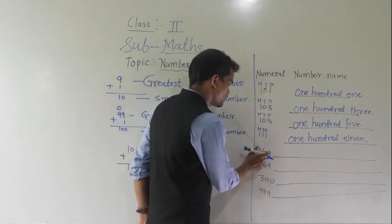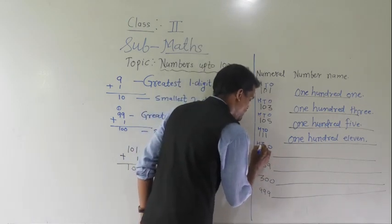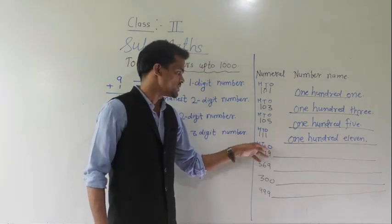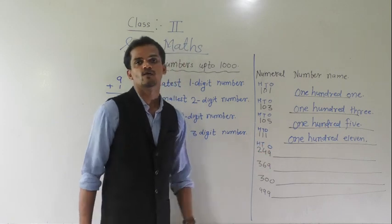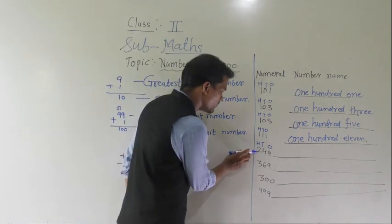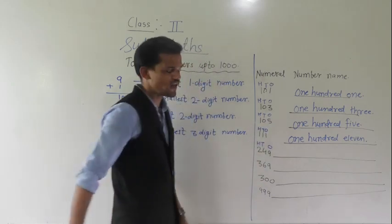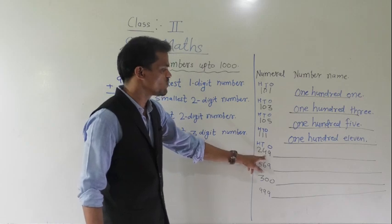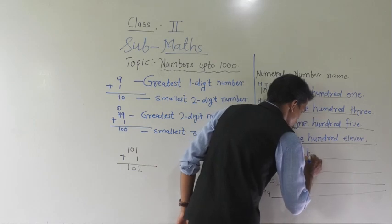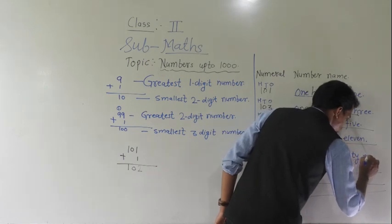Next number: 2, 4, 9. Write the positions — 1 place, 10 place and 100 place. In this number, 2 comes at 100 place, 4 comes at 10 place, and 9 comes at 1 place. How many hundreds? 200. 4 tens means 40, and 9 ones means 9. So, this number is 249: two hundred and forty-nine.